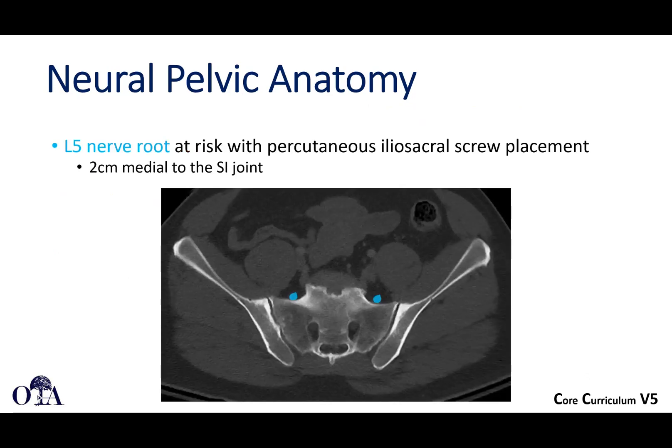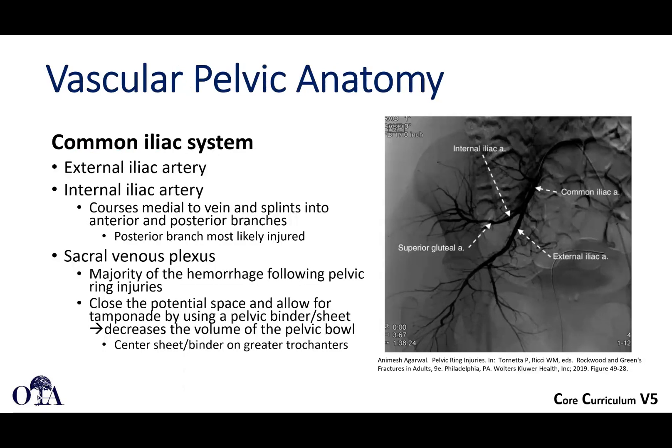The L5 nerve root is at risk — it sits on the anterior sacral ala of S1, as shown by the blue dots, coursing from proximal to distal. This is especially important when thinking about iliosacral screw placement. If you breach the cortex anteriorly when placing a screw, you could potentially damage the L5 nerve root and cause a foot drop.